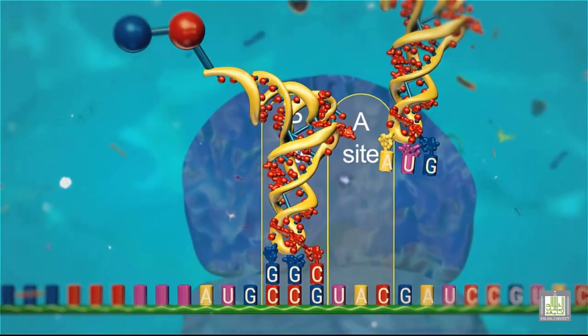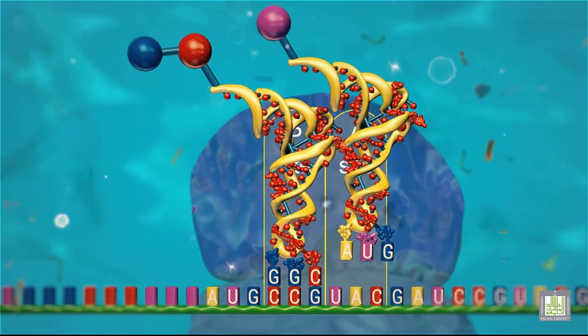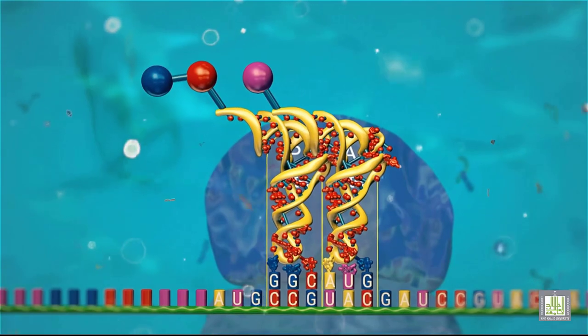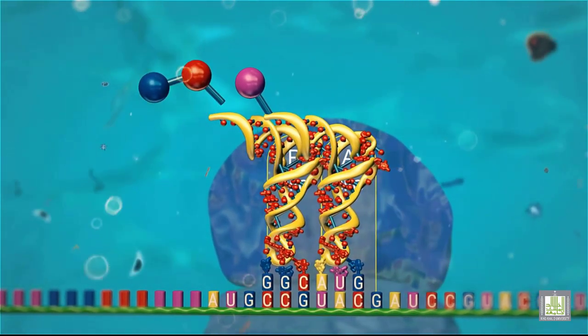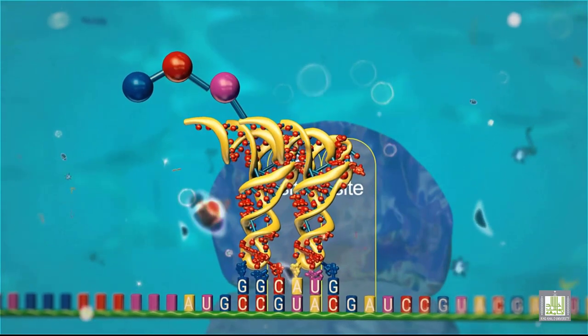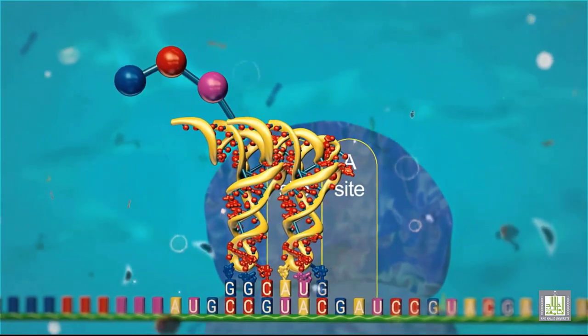A transfer RNA carrying the next amino acid now moves into the A-site, and the ribosome shifts down by a distance of one codon. This is followed by the two amino acids on the transfer RNA in the P-site being transferred to the third amino acid.